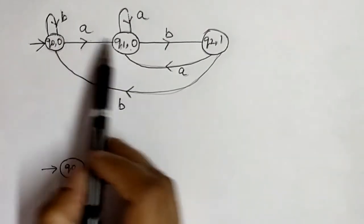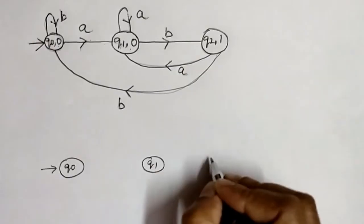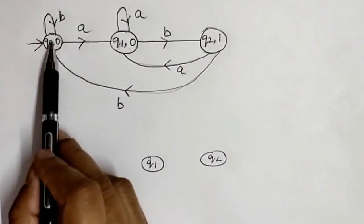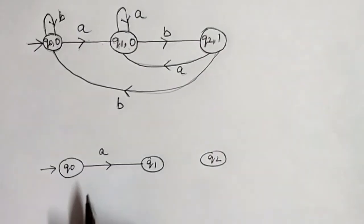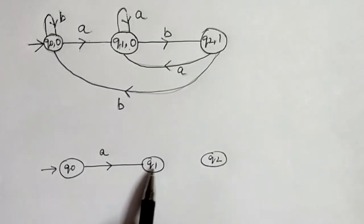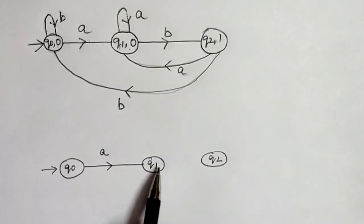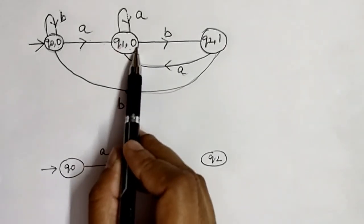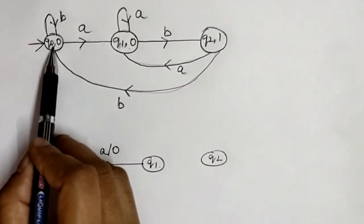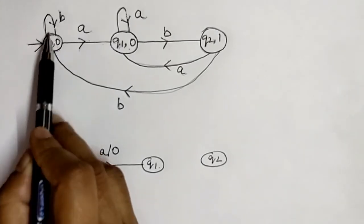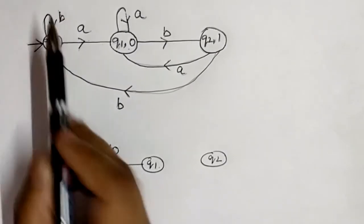We have states Q0, Q1, and Q2. The output is deleted from the state label and moves to be associated with the input transition. For Q0 with input A: there is a transition going to Q1, and Q1 has output 0, so this 0 output is associated with this transition. For Q0 with input B: it remains in the same state Q0, and Q0 has output 0, so this 0 output is associated with the B transition.